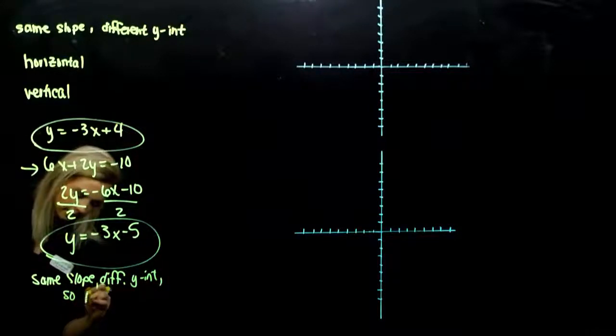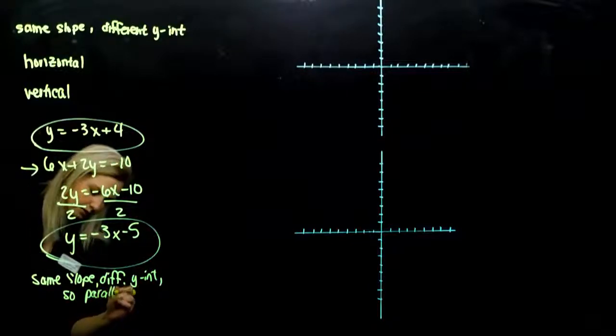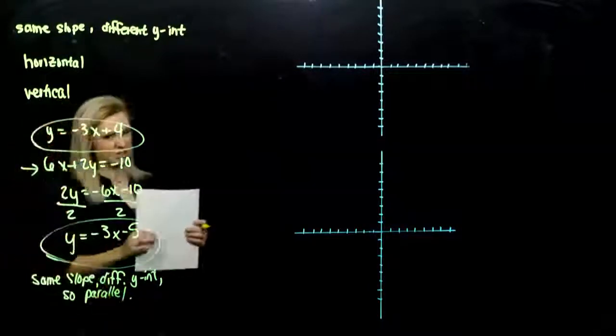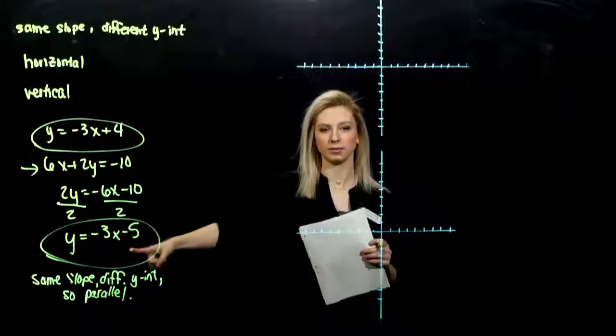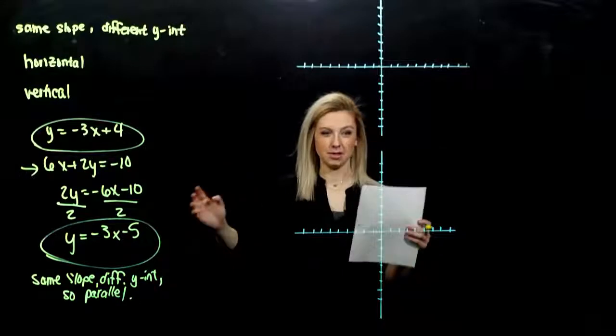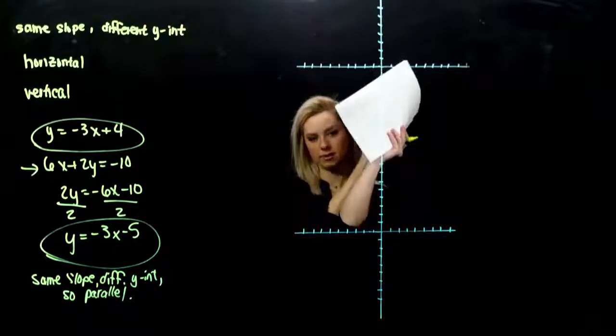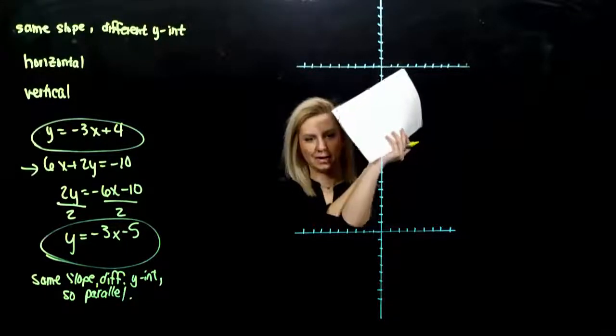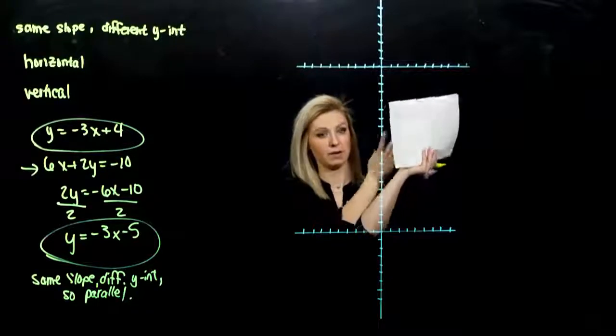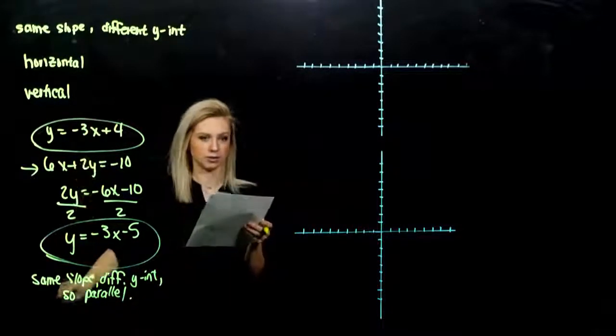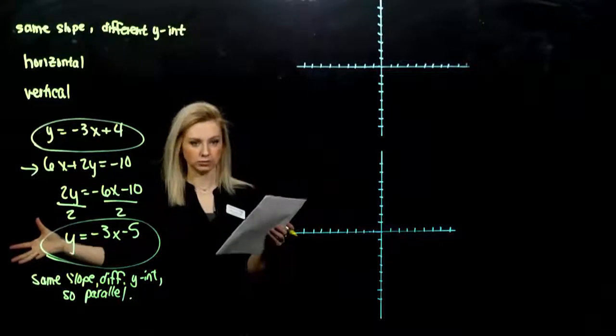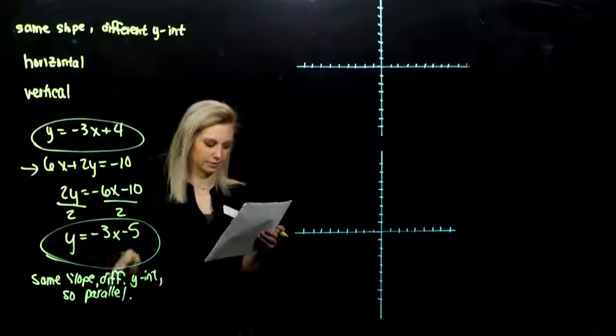So these are parallel lines. Now let's just pretend that we have the same slope and the same y-intercept. What about that case? It's going to be the exact same line, right on top of each other, but they might start off with different forms. So they'll have infinitely many solutions then. But in this case, how many solutions do we have? None, if we're looking at it as a system, because they'll never touch.